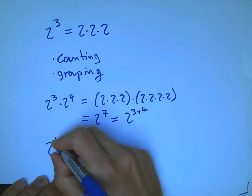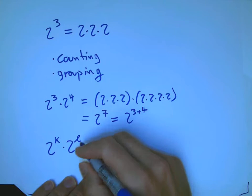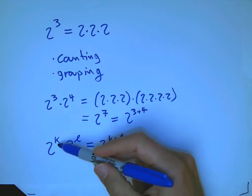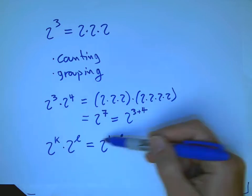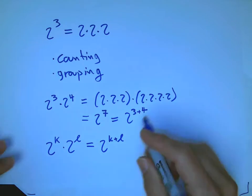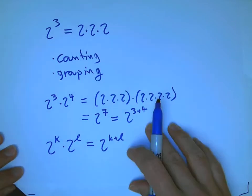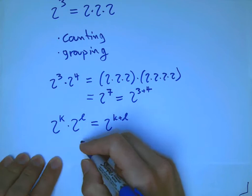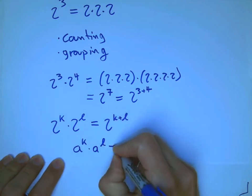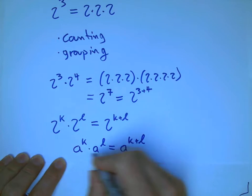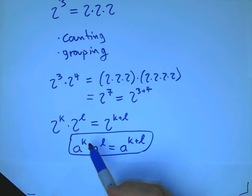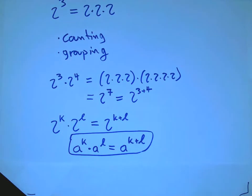In general, 2 to the K times 2 to the L equals 2 to the K plus L, because there are K twos and L twos — count them all together and you get K plus L twos. The general rule is A to the K times A to the L equals A to the K plus L. That's probably the most basic rule of exponents.